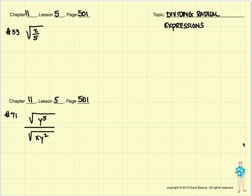Good morning. Chapter 11, Lesson 5 is on page 501. We're going to be dividing radical expressions and doing something called rationalizing the denominator. It looks bad in algebra, it looks bad in math in general if you have radicals in the denominator of an expression. So we're going to be rationalizing the denominator.